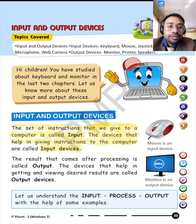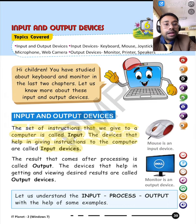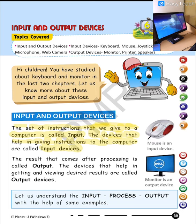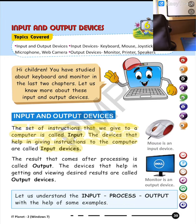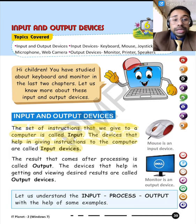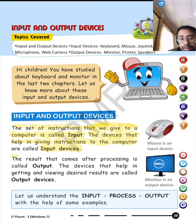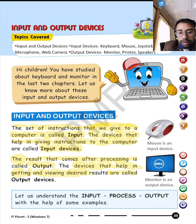The result that comes after arranging or after processing is called output. So what will be the output here? 2 plus 5 is 7. And those devices that give the output are called output devices. If I would like to show you an output device — in our school computer lab, what you can see is a monitor. So the result that comes after processing is called output, and the devices that help in getting and viewing desired results are called output devices.